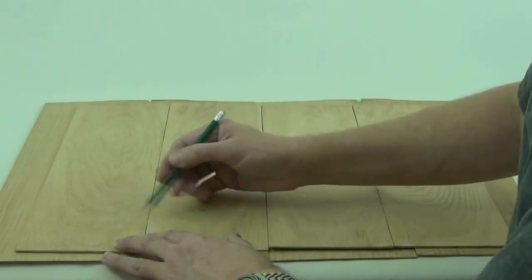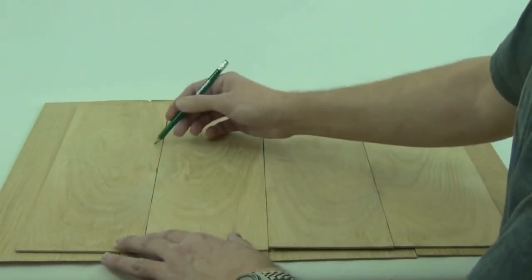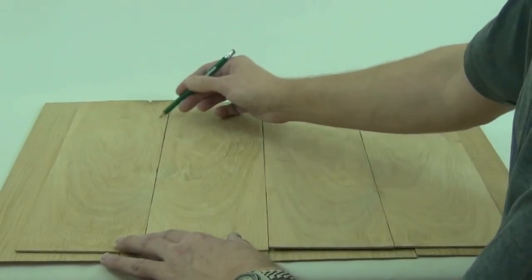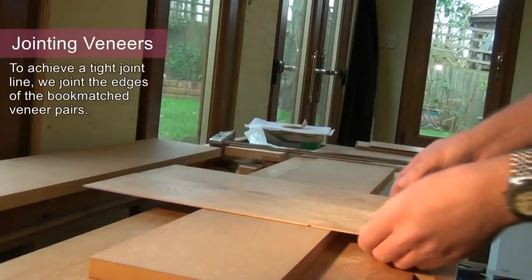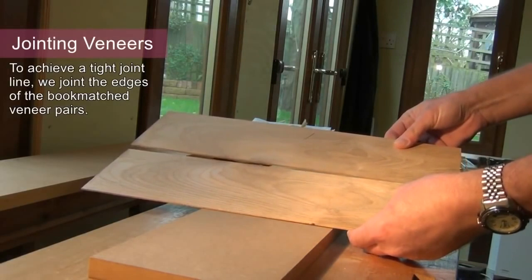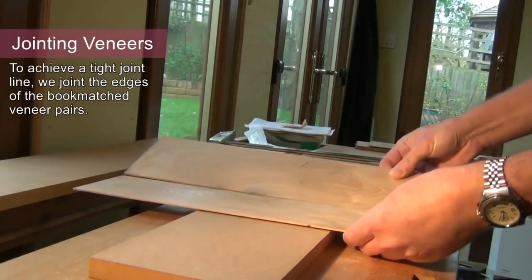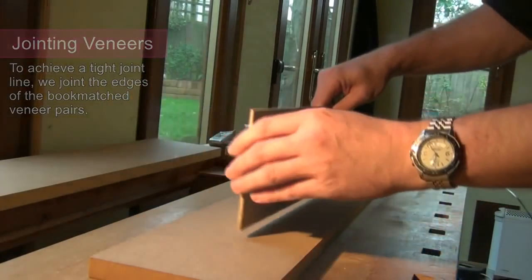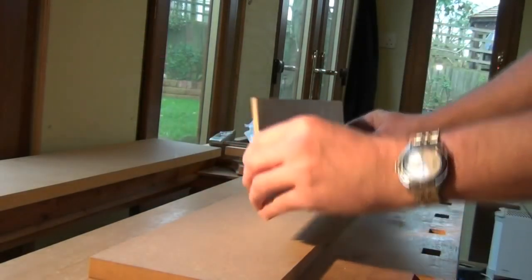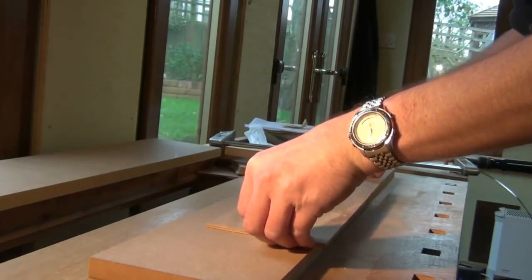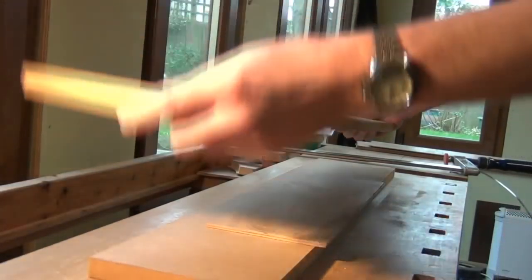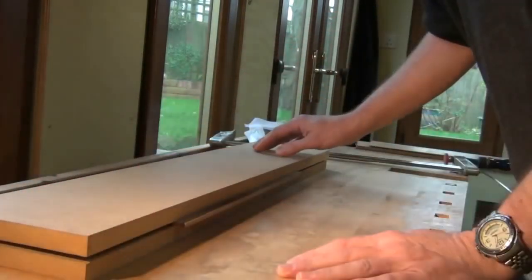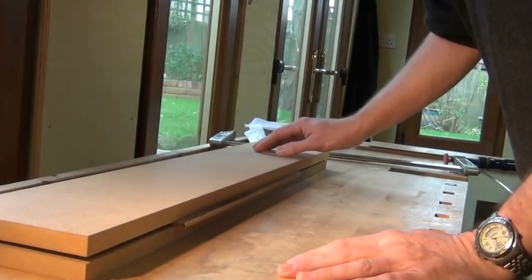To join the edges of the veneers, this is the joint I want in the middle of the two veneers. I fold them together, set the edges to be jointed just off the edge of a straight piece of MDF. Place another piece on top, clamp to the workbench and then shoot the edge with a hand plane.